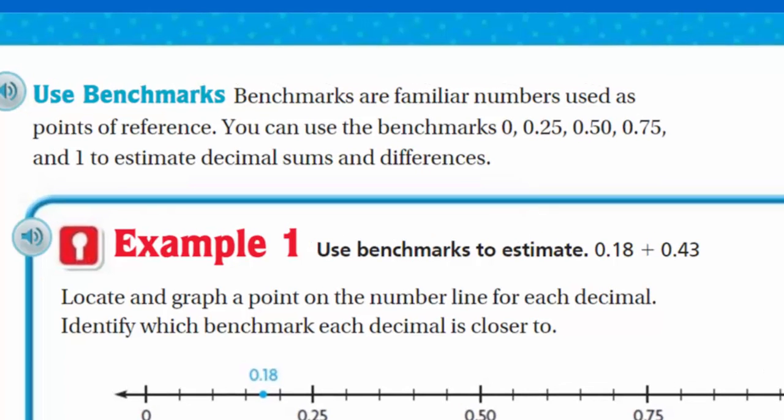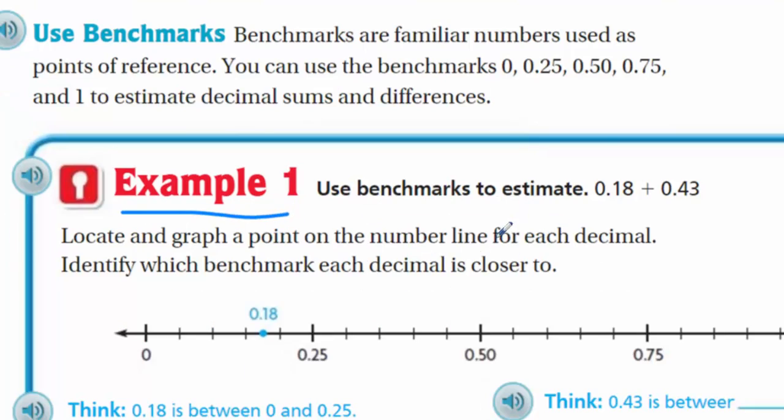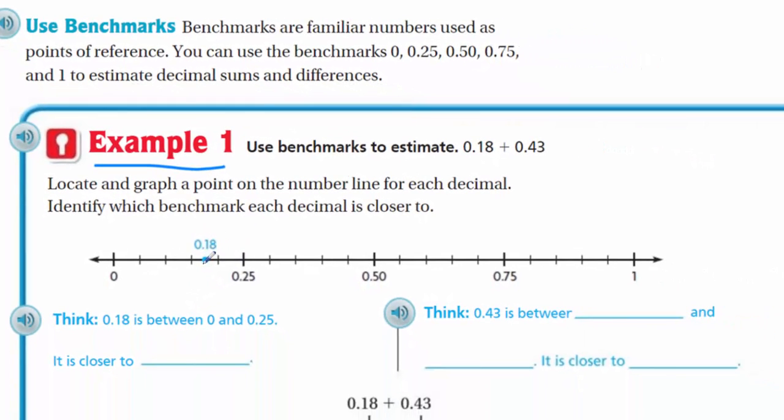Now we have use benchmarks. Benchmarks are familiar numbers used as points of reference. You can use the benchmarks 0, 0.25, 0.50, 0.75, and 1 to estimate decimal sums and differences. Let's take a look at this. Example 1: use benchmarks to estimate. We have 0.18 + 0.43. Locate and graph a point on the number line for each decimal. They've already got 0.18 listed here. They've divided this number line into fifths. So we'd have 0.05, 0.10, 0.15. So 0.18 would be between those. It is closer to 0.25.